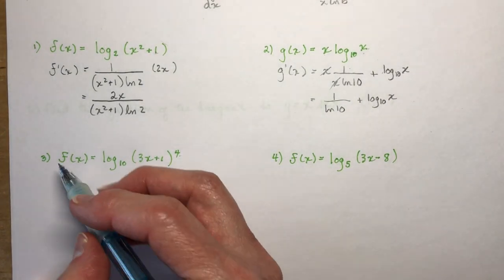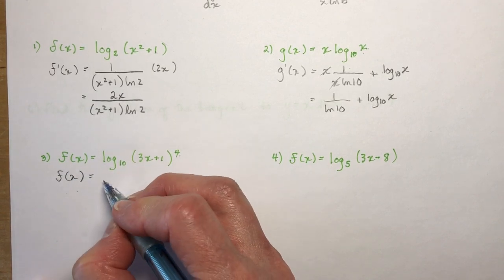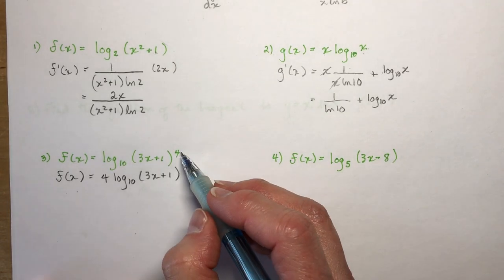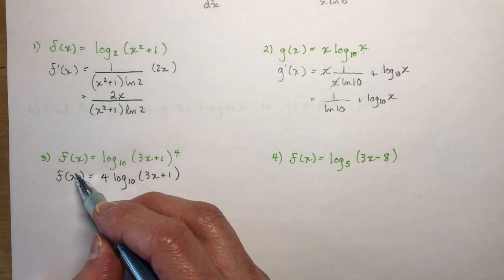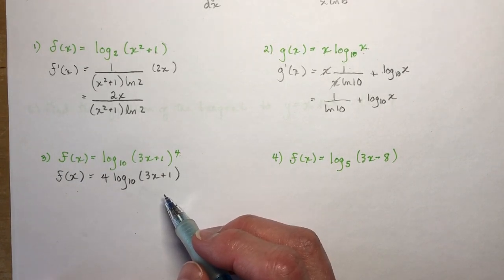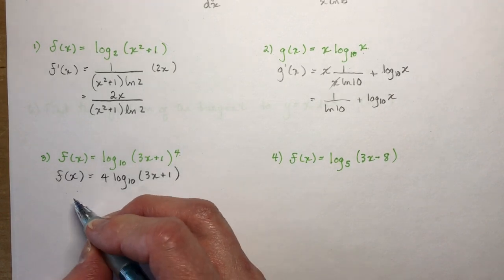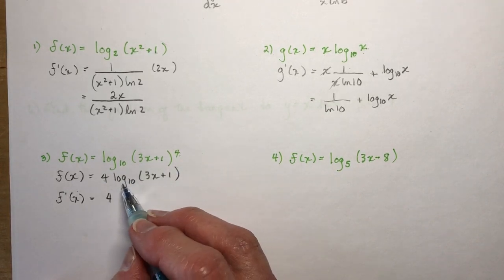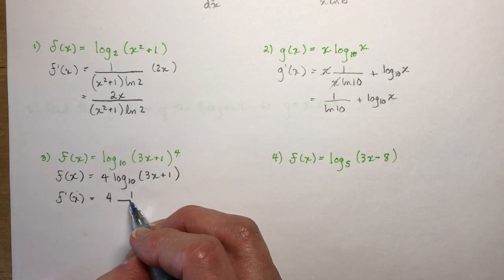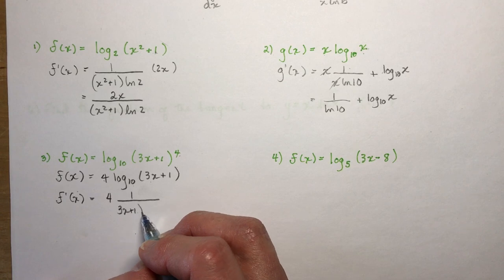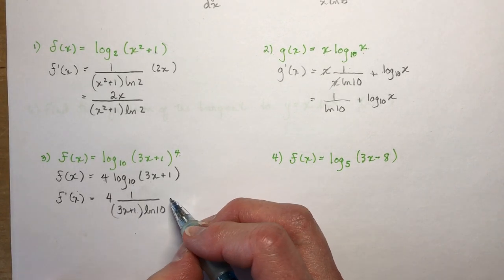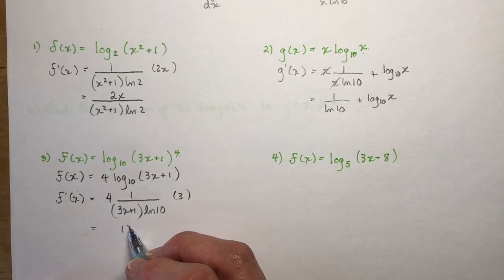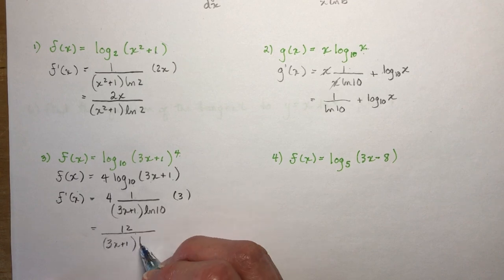If we have an exponent, because this is a logarithmic function you should initially rewrite it as 4 times log base 10 of (3x+1), using laws of logarithms. I'm not decreasing the exponent by 1 — this is simply rewriting it to make the calculation easier. So f prime of x equals 4 times 1 over (3x+1)·ln 10 times 3, which gives 12 over (3x+1)·ln 10.